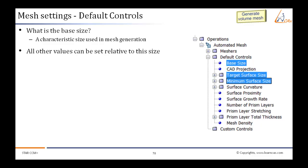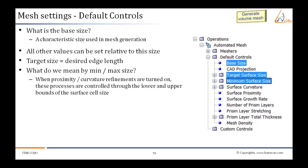Target size is the desired edge length. What do we mean by minimum and maximum size? When proximity or curvature refinements are turned on, these processes are controlled through the lower and upper bounds of the surface cell size.